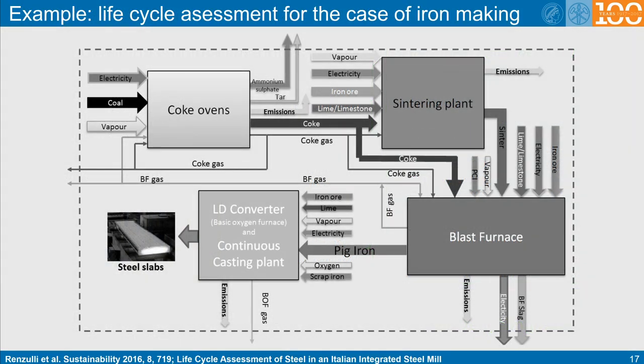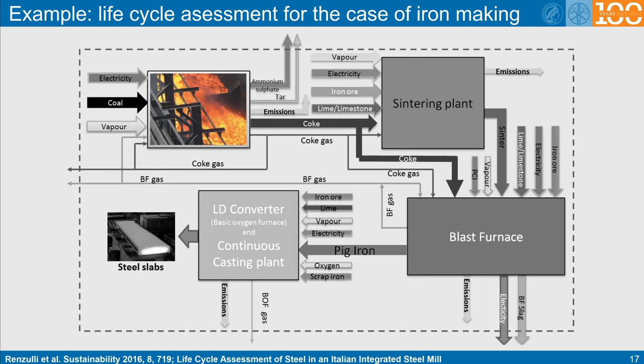Here is another example of life cycle assessment for the case of iron and steel making. With about 1.8 billion tons of iron production per year, the environmental burden associated with this material is extremely high, globally standing for about 30% of all industrial CO2 emissions. These data are taken from a publication about the life cycle assessment of steel produced in an integrated steel factory. This slide only serves as a very concise first introduction into this complex topic.